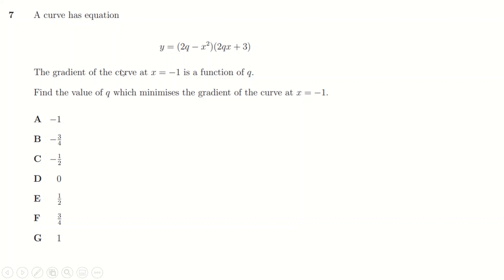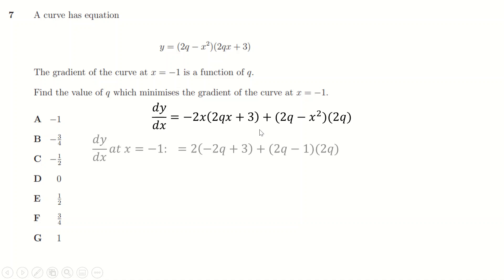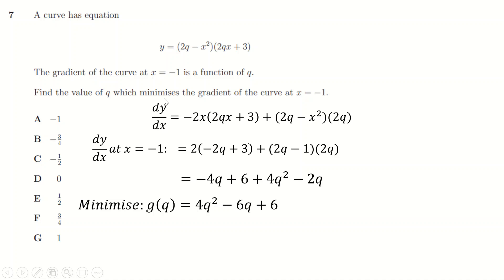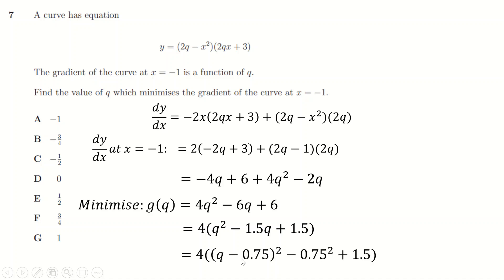Question seven: I use the product rule without expanding. Differentiating the first factor gives -2x, leaving the second factor unchanged; differentiating the second factor gives 2q, leaving the first unchanged. At x = -1, substituting gives a function in terms of q: 2 - 2q·(-1)·(-1) simplifies to a quadratic expression in q. I want to minimize the gradient at this point, so I minimize that function of q.